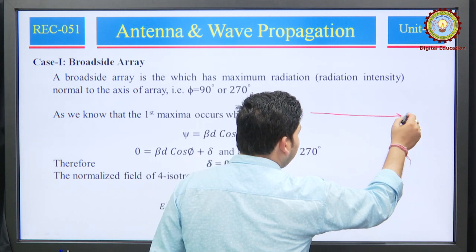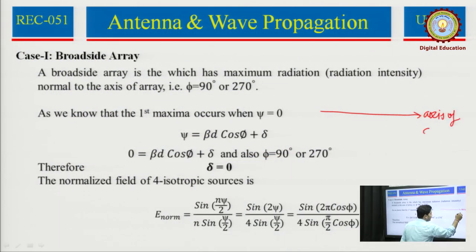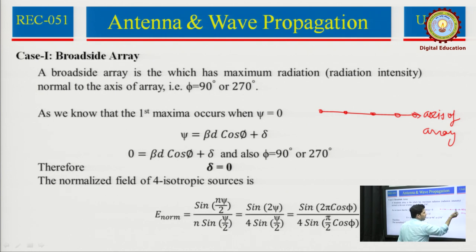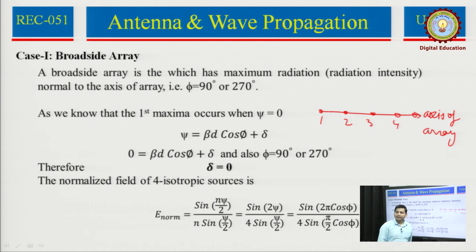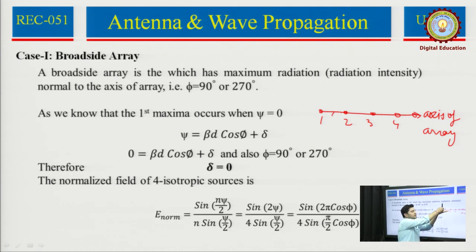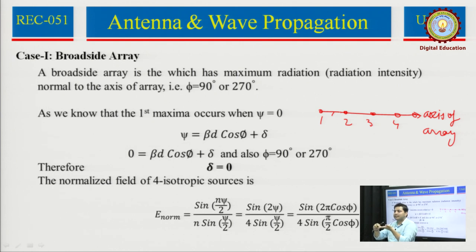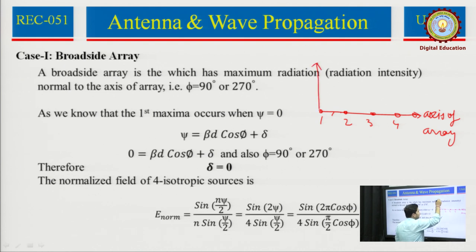If you recall, this is my axis of array — meaning where you deployed your point sources. Take the example of 4 isotropic point sources: 1, 2, 3, 4. This is the axis of array. Broadside array says that the maximum radiation is normal to the axis of array. So if this is my direction, normal means this way and also the opposite way. If my sources lie in this plane, then the normal position upward and downward is the normal condition. Toward these two directions I have maximum radiation — that is known as broadside array.